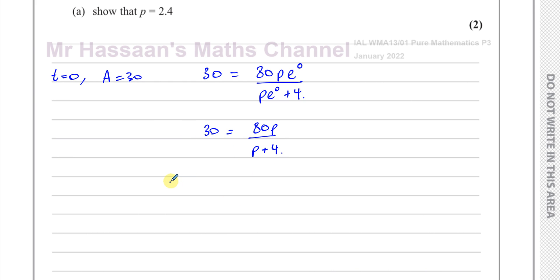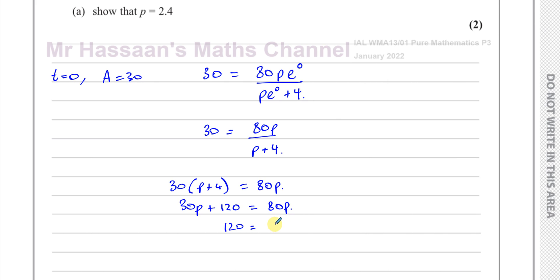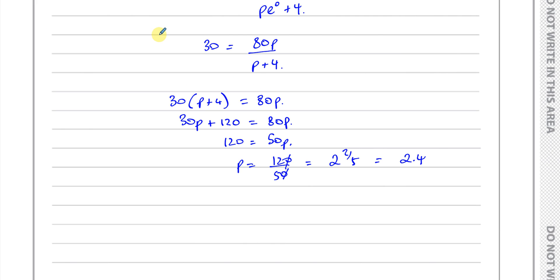Cross-multiplying, we have 30 times (P plus 4) equals 80P, so 30P plus 120 equals 80P. Therefore 120 equals 80P minus 30P, which is 50P. So P equals 120 over 50, which gives 12 over 5, equal to 2.4. We've shown that clearly, and that's part A done.